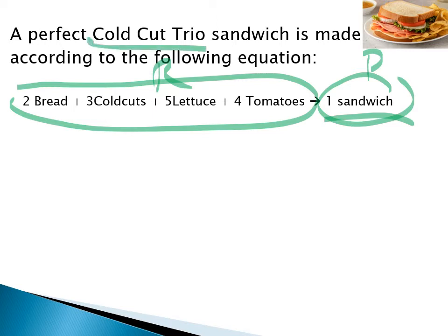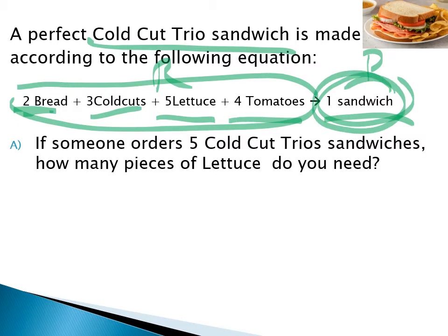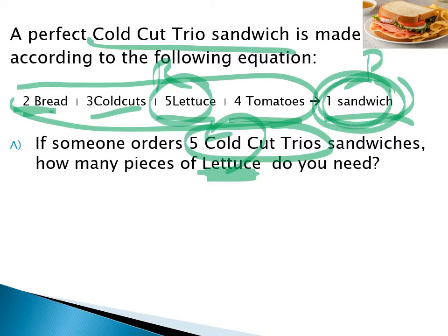A chemical reaction can make more than one product in different ratios. For this particular one — making a perfect cold cut trio sandwich — there are two pieces of bread, three cold cuts, five pieces of lettuce, four tomatoes, and that produces one sandwich. If someone ordered five of these sandwiches, you can do the math in your head as to how much you'd need of each ingredient.